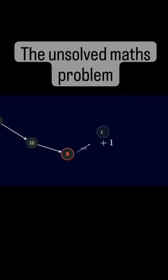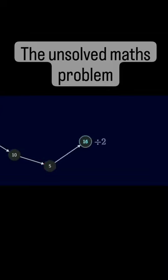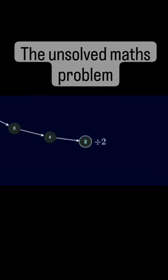Odd, multiply by 3, 15, add 1, 16, divide by 2, that's 8, and then 4, 2, and 1.